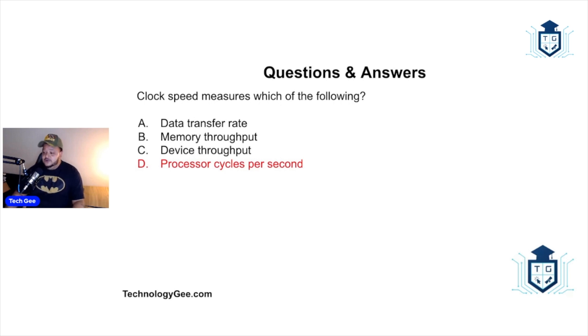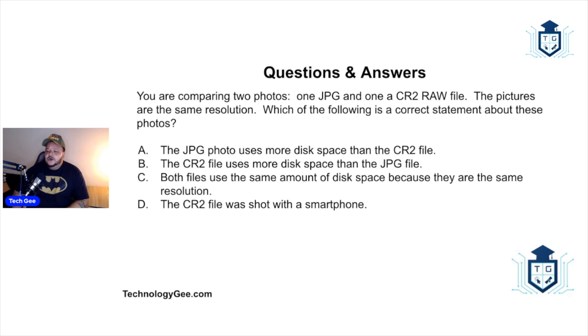You're comparing two photos: one's a JPEG and one is a CR2 raw file. The pictures are the same resolution. Which of the following is a correct statement about these photos? If you guys know anything about photography, you know automatically that the raw file is going to take up more space, so the CR2 raw file.